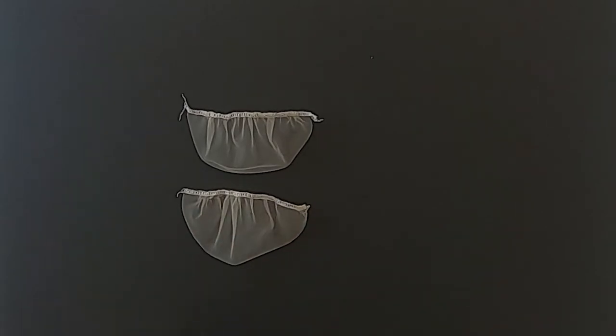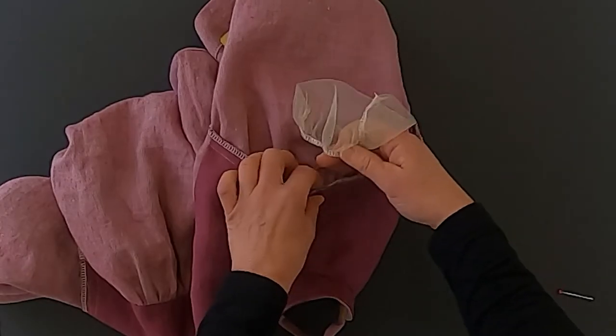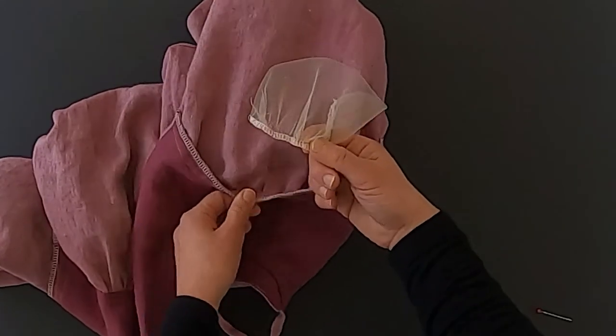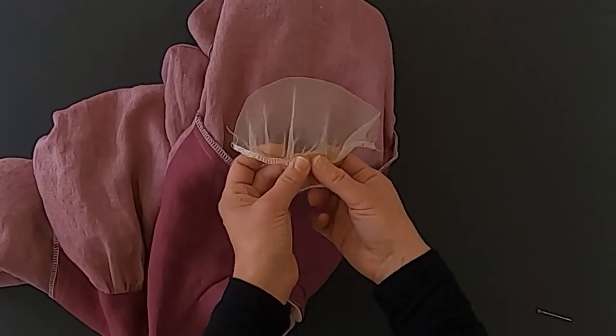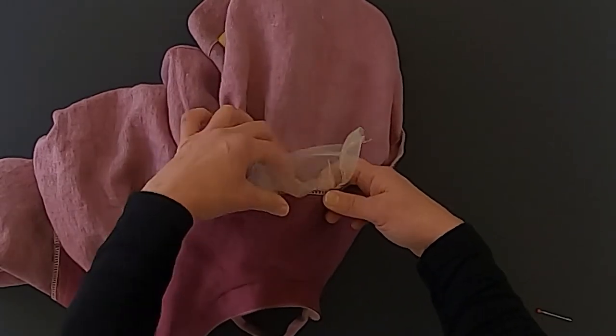You can finish the edge with the serger or zigzag stitch. I prefer to keep these edges serged rather than using a binding, which is what they typically do in these nice dresses, formal dresses and things. They'll finish the edge, but we're going to kind of hide this into the seam and I don't want a lot of extra bulk.